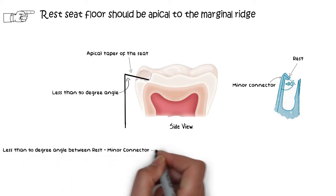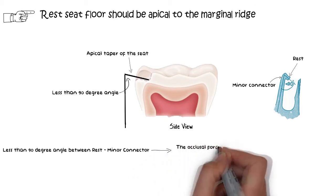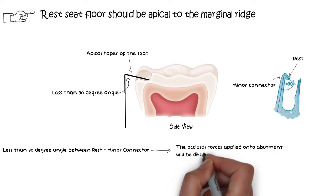Only by incorporating this feature in the design, the occlusal forces applied onto the abutment will be directed along its long axis, which is the main function of the rest to direct the occlusal forces along the long axis of the tooth. When the angle between the rest and the connecting minor connector is less than 90 degrees, only then can the rest perform its function of axial loading effectively.